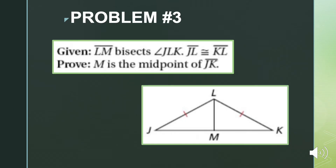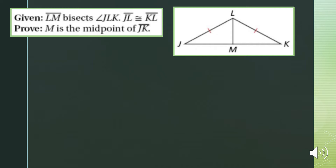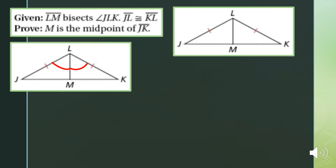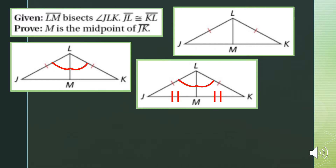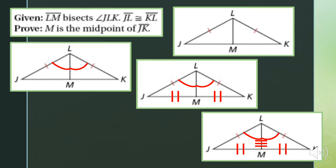Problem number three. We were given that line segment JL is congruent to line segment KL. We were also given that line segment LM bisects angle JLK, so that means angle JLM and angle KLM are congruent. We need to prove that M is the midpoint of line segment JK, which means we first need to prove that line segment JM is congruent to line segment MK. Since we only have two corresponding parts, we add a third: LM is congruent to itself by reflexive property.